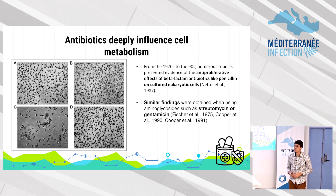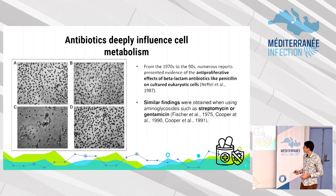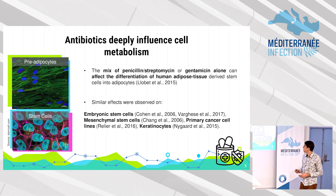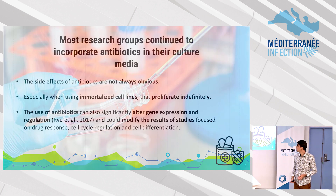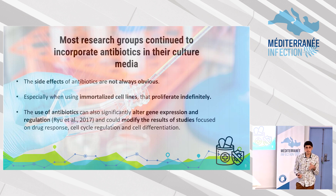Studying this further, we discovered many reports saying that using penicillin in eukaryotic cells can change the proliferative profile of many cell types, as well as the differentiation of adipocytes, embryonic, mesenchymal, primary cells, and keratinocytes. However, most research groups still use penicillin and other antibiotics in their cell culture media because the side effects are not always obvious, especially in immortalized cells.